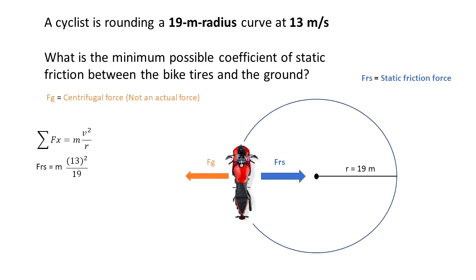We have that the friction force is equal to m times 13 squared over r. This equals the normal force times the coefficient of static friction. This is the FS max.